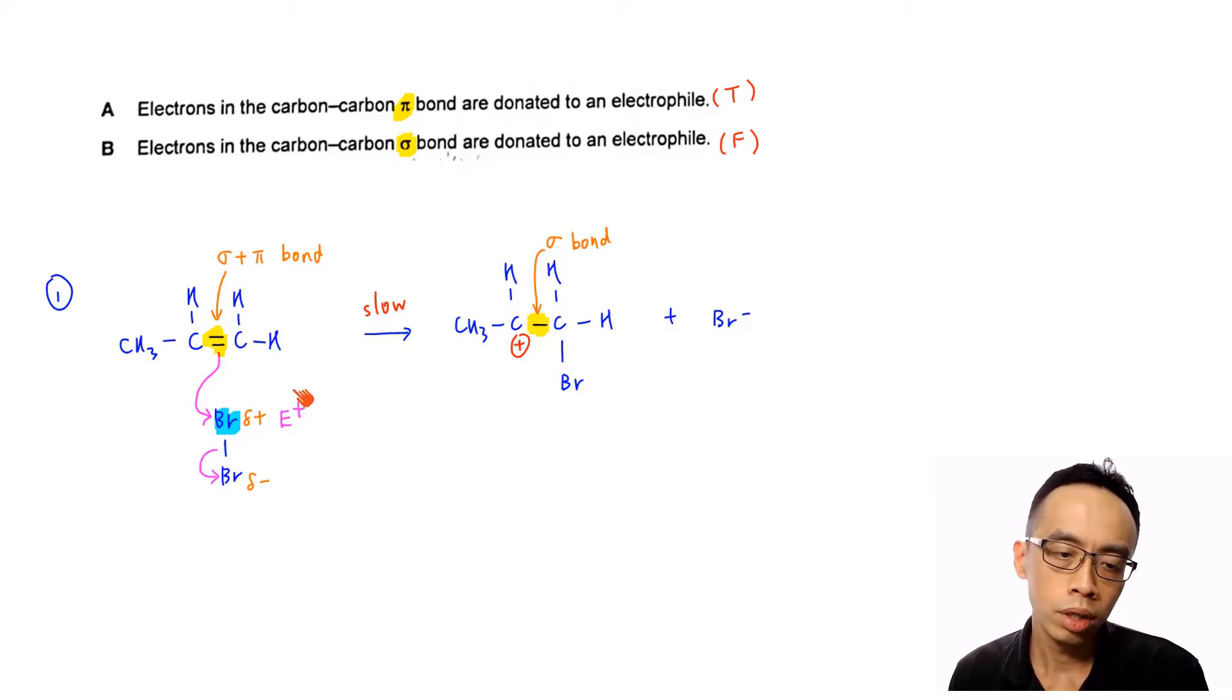Now what we can do is, again usually when we draw mechanism, we really don't try to distinguish whether do I draw the arrow from a pi bond or a sigma bond because the double bond usually we just represent it as a sigma bond plus pi bond. A double bond would be sigma plus pi. Usually we don't try to differentiate which one is the sigma bond which is the pi bond.